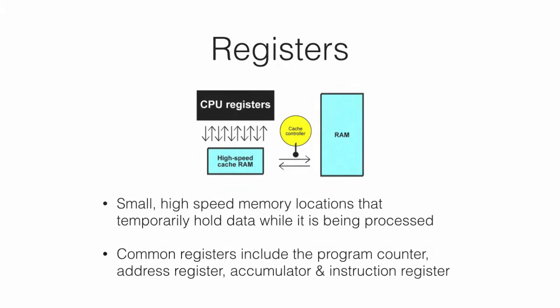The processor also contains small high-speed storage locations called registers. These temporarily hold data and instructions. Registers are part of the processor, but not part of the memory. Common registers include the program counter, address register, accumulator and instruction register.